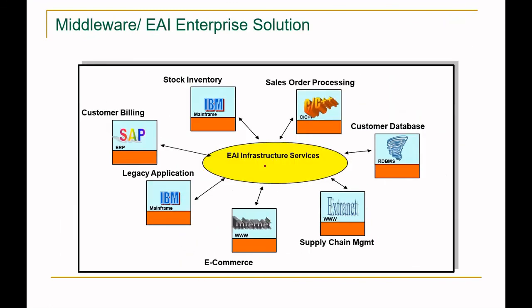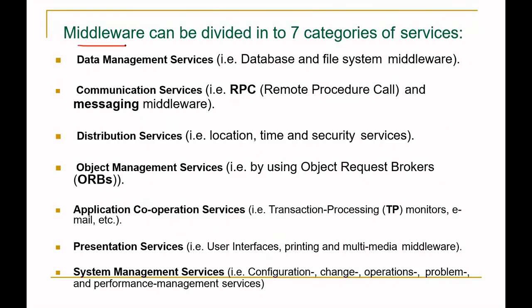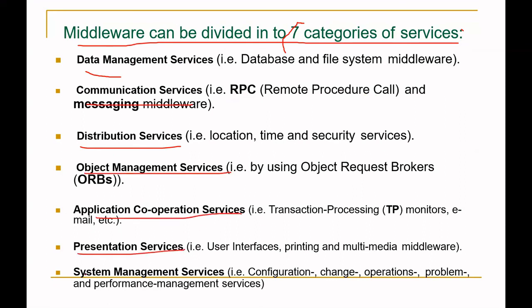Middleware can be divided into seven categories of services: data management services, communication services, distribution services, object management services, application cooperation services, presentation services, and system management services. Data management services handle the database and file system middleware — storing and extracting data. Communication services involve Remote Procedure Calls (RPC) and messaging middleware. RPC allows calling functions located on other machines and receiving their output.